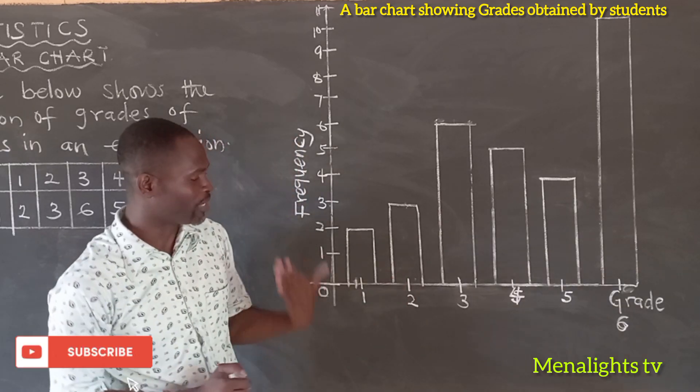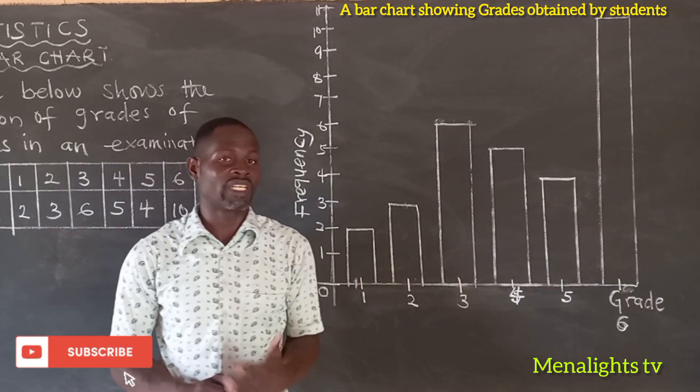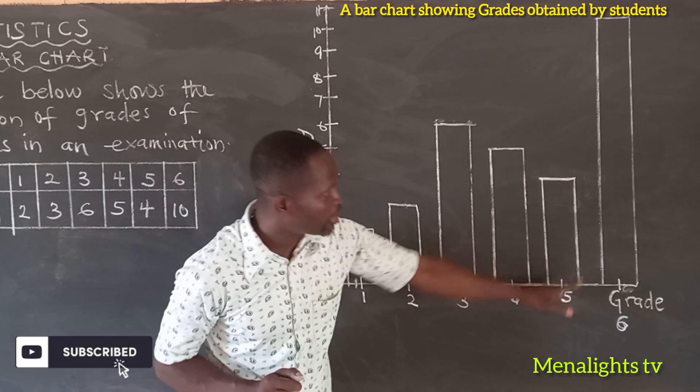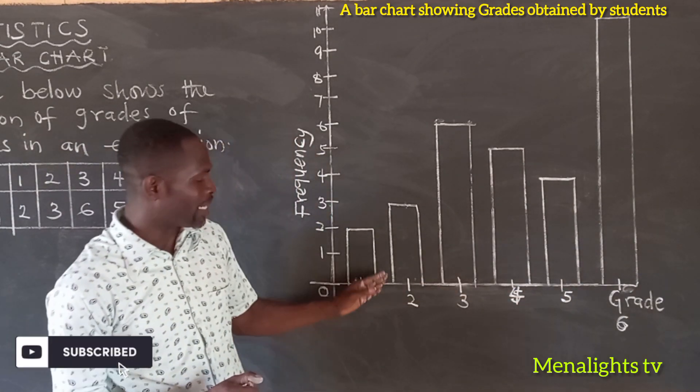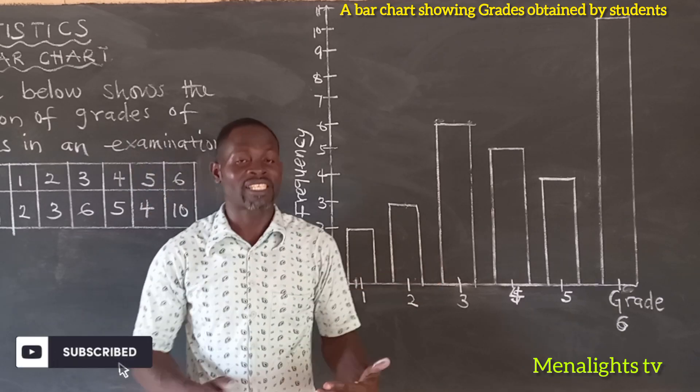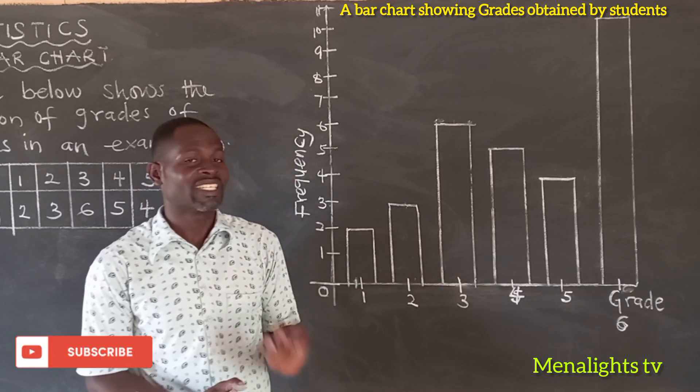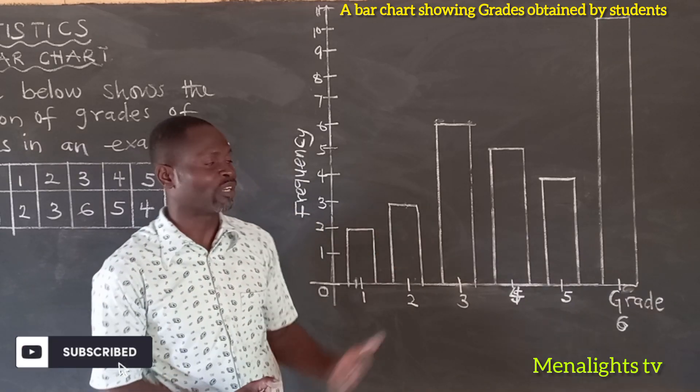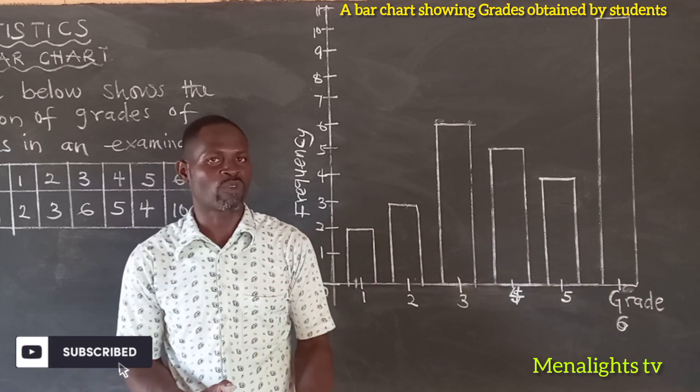So let's recap. When you're drawing the bar chart, the distance has to be the same. Though this one is not drawn up to scale, but the distance has to be the same. The size of the bars must be the same. The height will determine, the frequency will determine the height of the bar. So the height will not be the same because of the frequency.